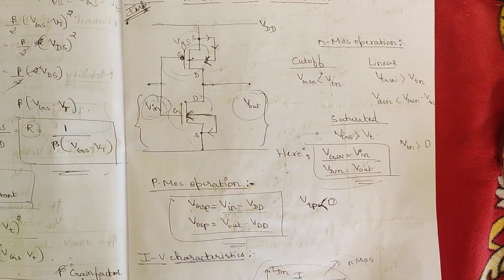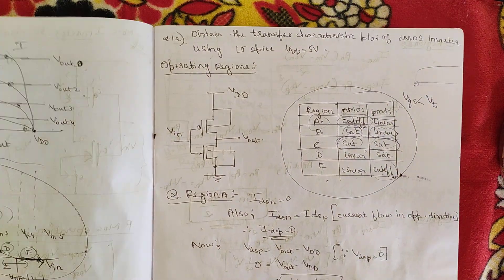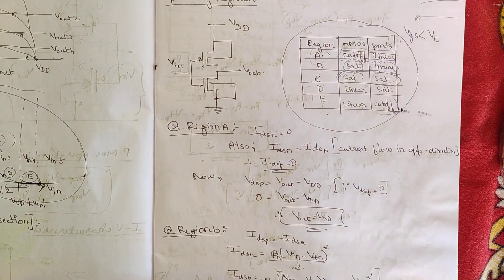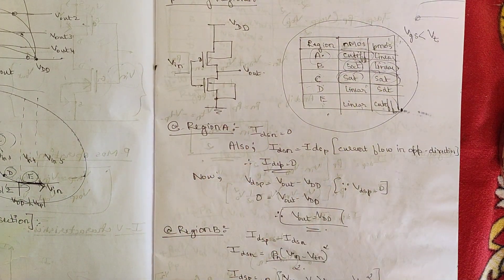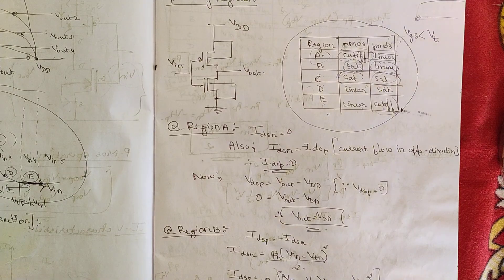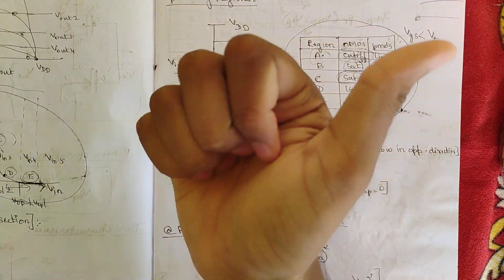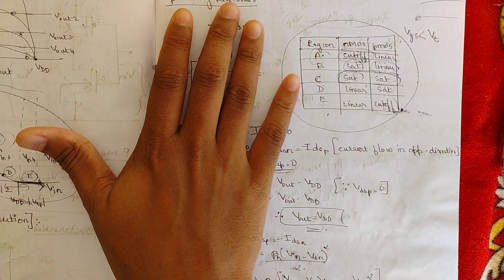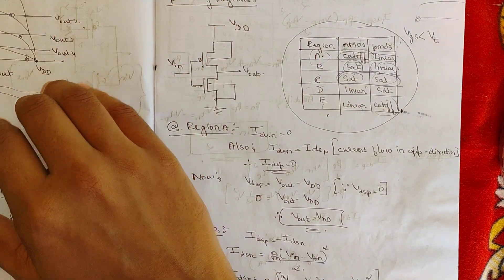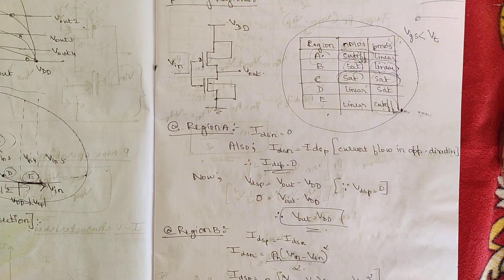That covers the operating regions and the complete CMOS inverter DC characteristics. In the upcoming video, we will go deeper into each region and examine the set of equations for all five regions, leading to final conclusions from the DC transfer curve plot. Please like, share, and subscribe — we regularly upload videos on VLSI design and testing, embedded systems, digital image processing, and other subjects.